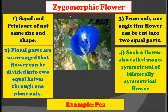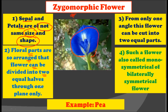The second type of symmetry in a flower is the zygomorphic flower. Sepals and petals in a zygomorphic flower are not of the same size and shape. Here in the picture you can see the sepals and petals are not of the same size. The floral parts are so arranged that the flower can be divided into two equal halves through one plane only. There is only one angle through which you can cut this flower into two equal parts.